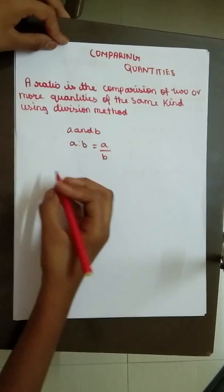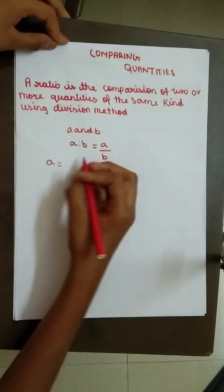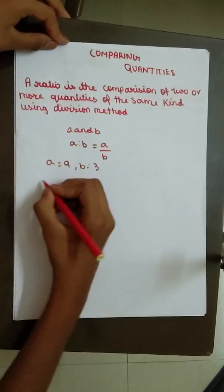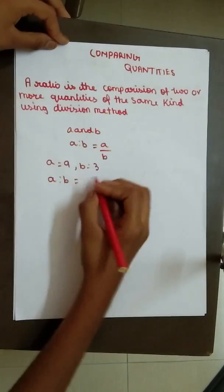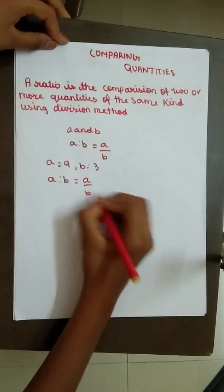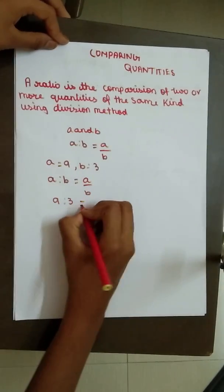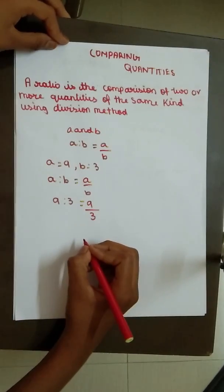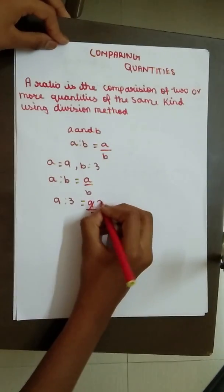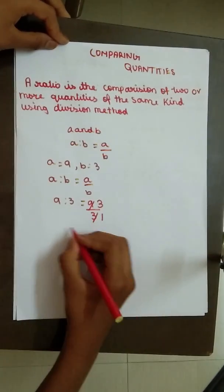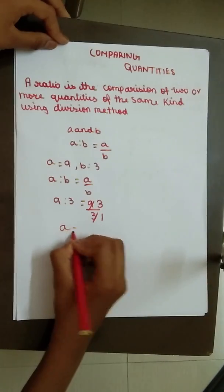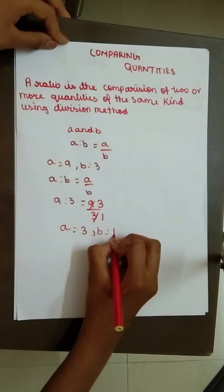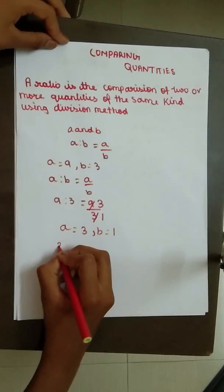It is equal to A by B. Shall we take an example now? We can take A as 9 and B as 3. That is A is to B equal to A by B. 9 is to 3 equal to 9 by 3. 9, 3 times 3, 1 time. Therefore, A equal to 3 and B equal to 1. 3 is to 1.